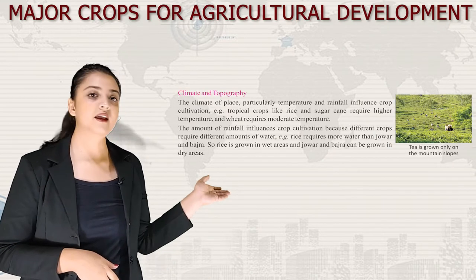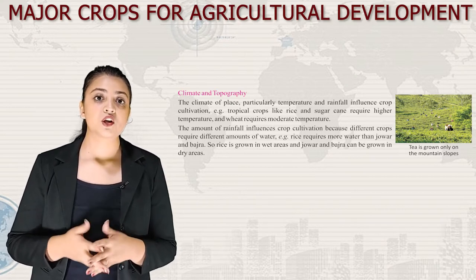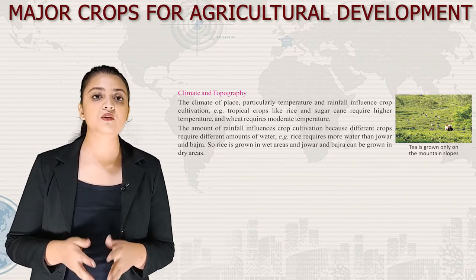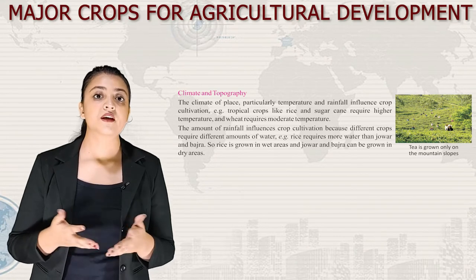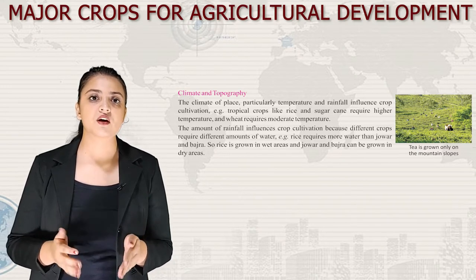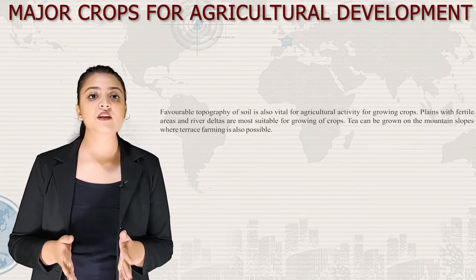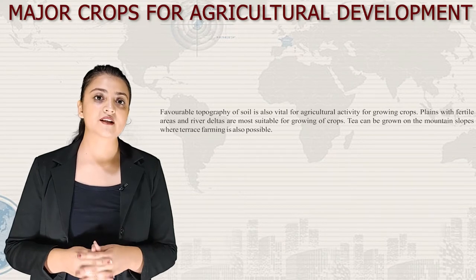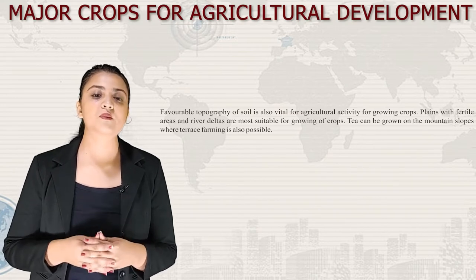The first factor is climate and topography. The climate of a place, particularly temperature and rainfall, influence crop cultivation. Tropical crops like rice and sugarcane require higher temperature, while wheat requires moderate temperature. Different crops require different amounts of water — rice requires more water than jawar and bajra, so rice is grown in wet areas while jawar and bajra can be grown in dry areas. Plains with fertile areas and river deltas are most suitable for growing crops. Tea can be grown on mountain slopes where terrace farming is also possible.